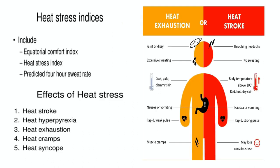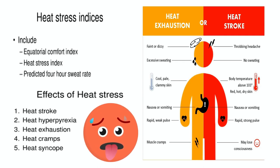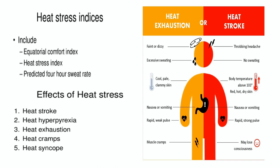Now we are focusing on heat stress indices. First is the equatorial comfort index, which is the comfort index measured by 30 indicators including physical and environmental aspects, and some solar exposure, radiation exposure, and weather exposure. Heat stress index comprises the relation of the amount of evaporation required as related to the maximum ability of the average person to survive. Predicted 4-hour sweat rate includes the maximum ability of the person to sweat in 4 hours, which is normally 1 to 3 liters per hour in normal range.